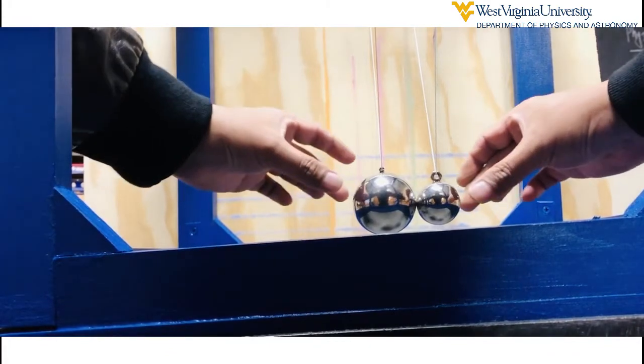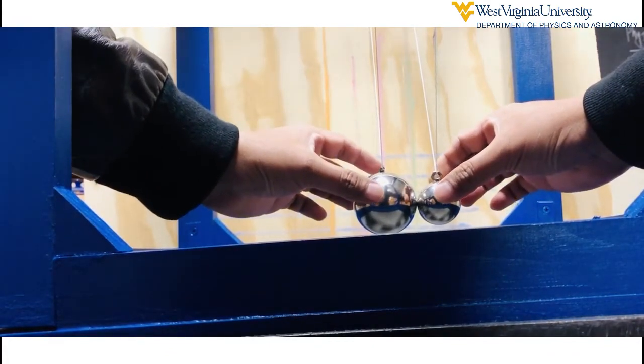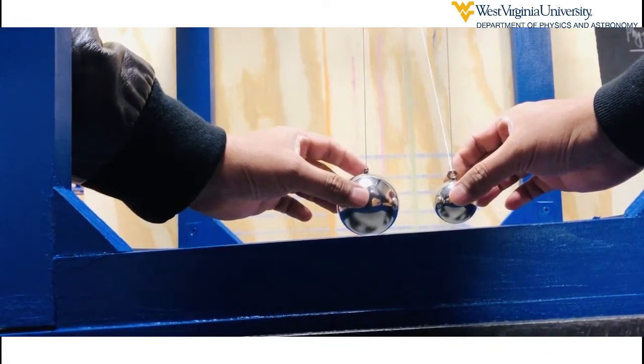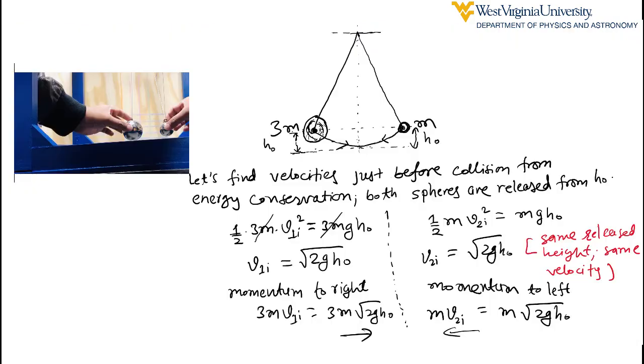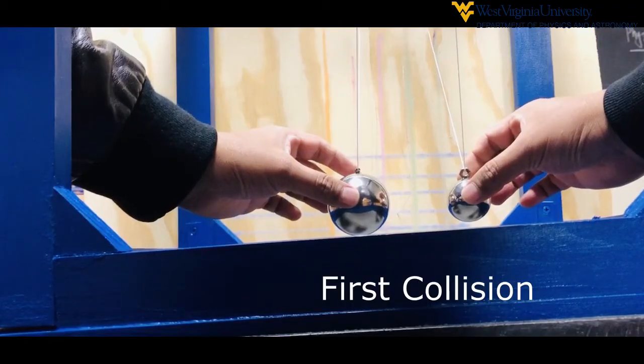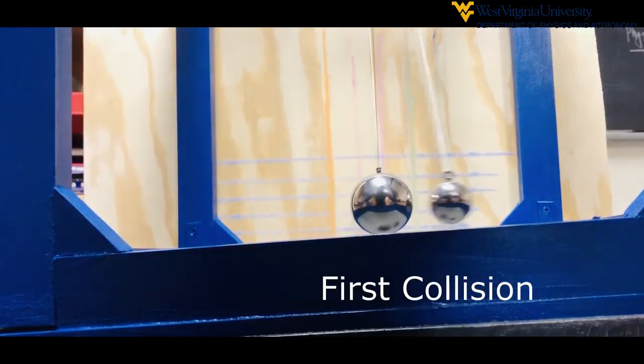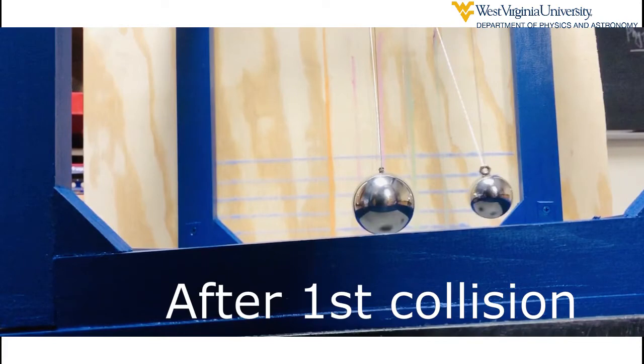If we release both balls from same height, they collide with equal and opposite velocity. Since the bigger ball, the three m mass ball here, has three times more momentum. From conservation of momentum, momentum transfers from bigger ball to smaller ball.